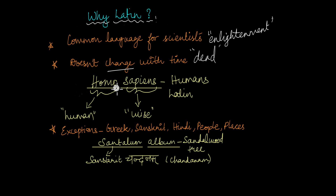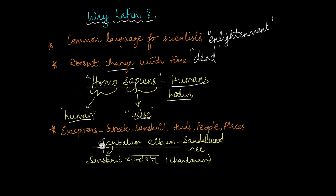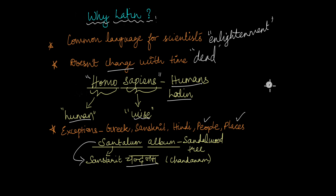For example, the scientific name for humans is Homo sapiens, which is entirely in Latin. Homo in Latin means human and sapiens means wise, so this scientific name will never change. There are exceptions to using Latin — other languages like Greek and even Sanskrit are used. For example, the scientific name of the sandalwood tree is Santalum album. Santalum is a Latin word derived from the Sanskrit word Chandanam. A lot of scientific names even use the names of famous people or places where the organism is commonly found. Let's take a look at some examples.